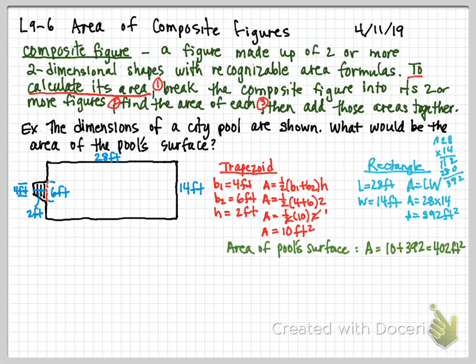That's the first composite figure. Now we're going to do one more example below. This next one asks us again to find the area. These dimensions don't match what we have, so let me build the shape.